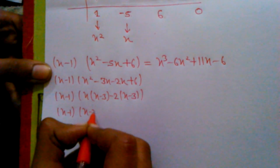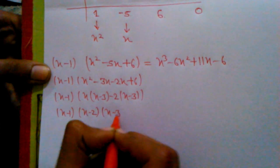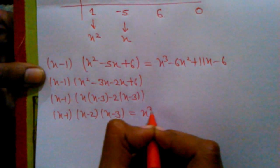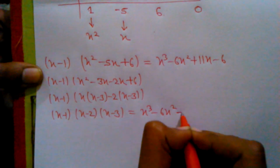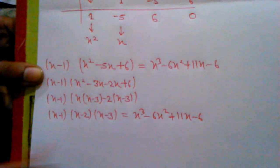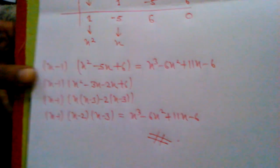And here, (x - 1)(x - 2)(x - 3) = x³ - 6x² + 11x - 6. And this is it.